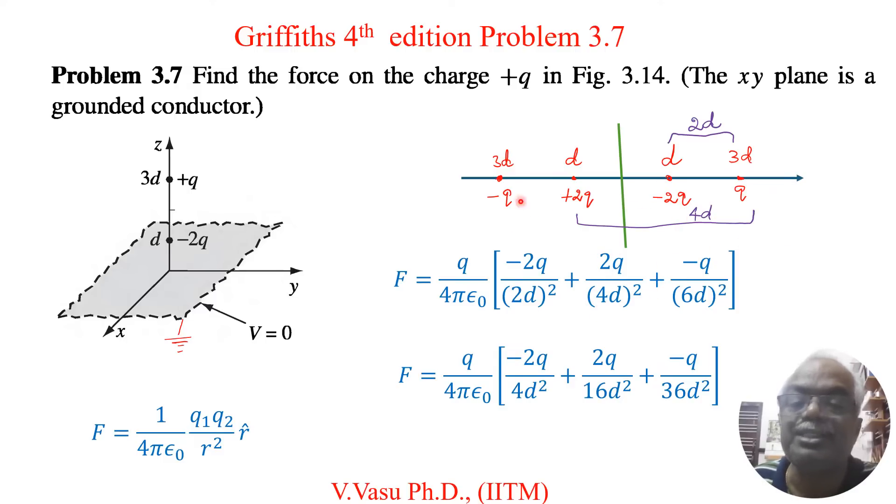Then the force due to this charge minus q. The distance from here to q is 3d here, another 3d here, so this distance is 6d. So the force on q due to minus q is minus q divided by r squared, here r is 6d, 6d squared. So we can write this is 4d squared, this is 6d squared, this is 36d squared.